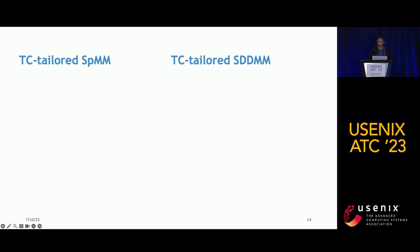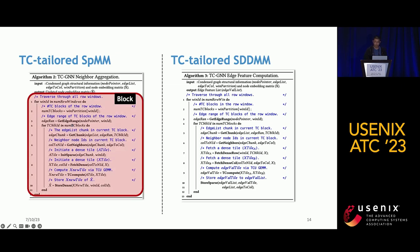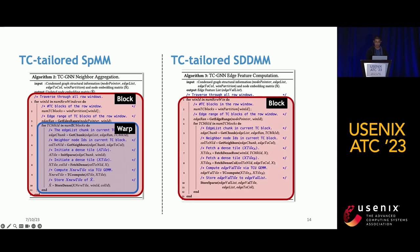We map our SPMM design to GPU processing units for execution. For different row windows, computation is fully parallelized among different thread blocks. Processing of different embedding matrix dimension ranges is parallelized by different warps. A similar strategy applies to SDDMM, where each thread block is assigned to each adjacency matrix row window, and warps iterate through different dimension ranges of the input embedding matrix and its transpose.